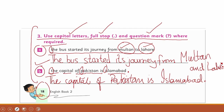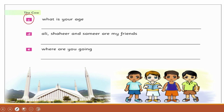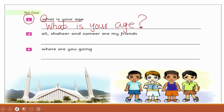Part C: 'what is your age?' — this is a question, so a question mark is used at the end of every question, and the sentence starts with a capital letter. 'What is your age?' — question mark. Part D: 'Ali, Shaheer and Samir are my friends' — 'Ali, Shaheer and Samir are my friends.'